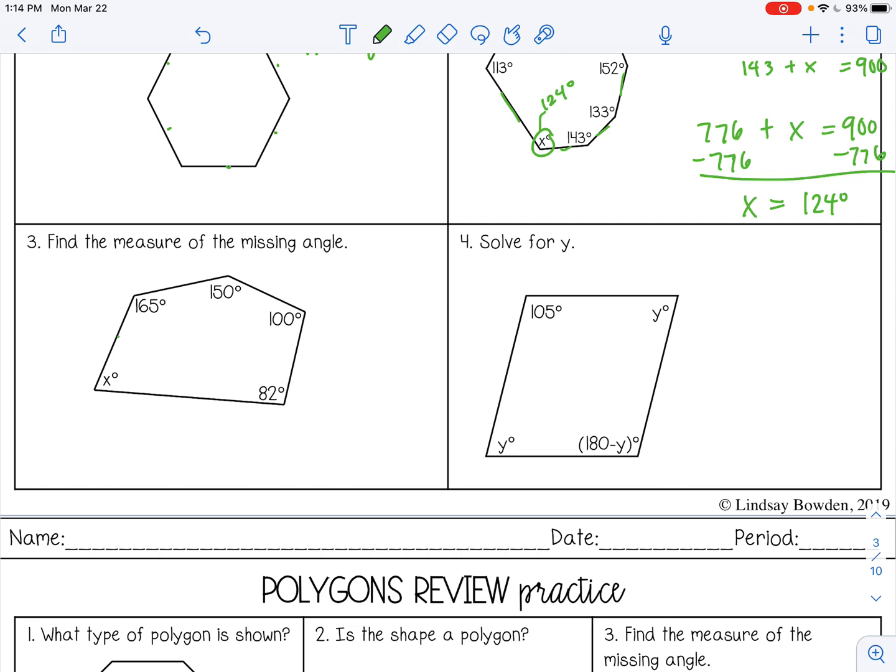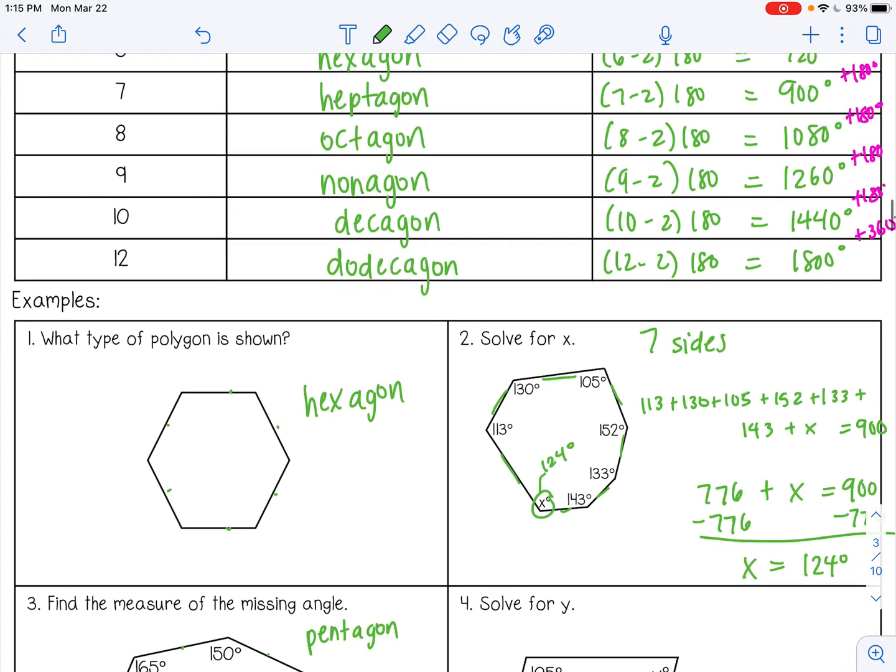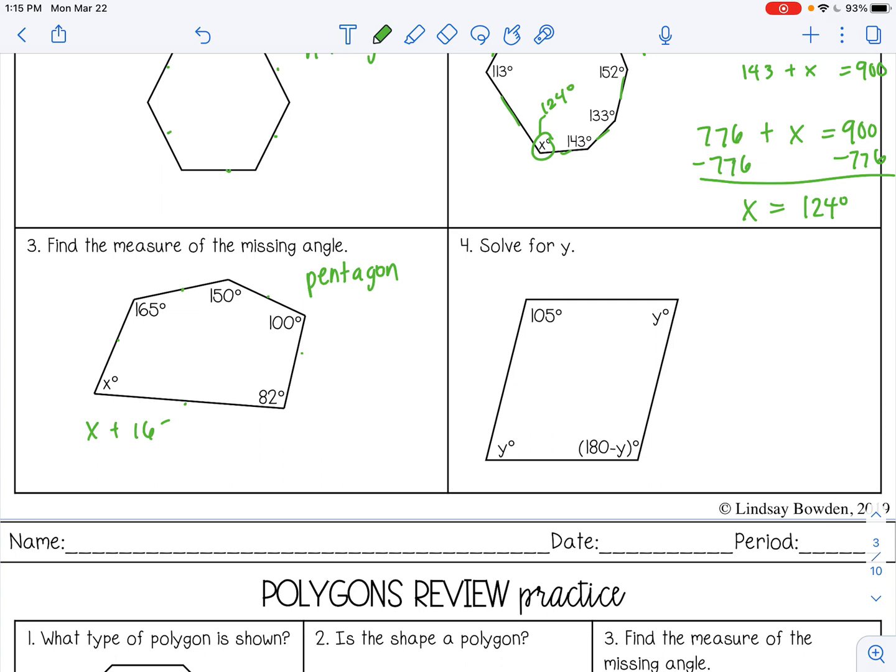Alright, number three. This has one, two, three, four, five sides. So it's a pentagon. Let's scroll back up and see how many degrees. So 540. So that means all of these angles should equal 540. It doesn't matter the order that you list them in. You can put x first, you can put x last, or in the middle. It doesn't matter. Just make sure you don't forget any. So let's add up all of the angles that we know already. So 165 plus 150 plus 100 plus 82. And we get 497. Then I'm going to subtract that from both sides. And you get 43 degrees. So this angle here is 43 degrees.